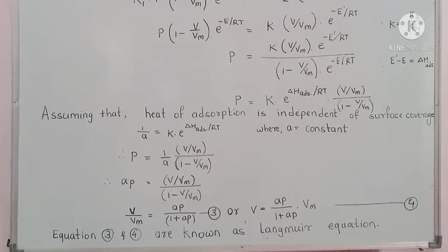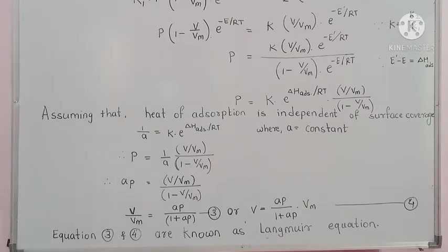Consider that as equation 3. We can also rearrange this as V = (AP / (1 + AP)) × Vm — this is equation 4. Equations 3 and 4 are known as the Langmuir equation.